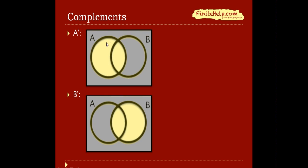A complement would be everything that's not in A. So here, as you can see, the shaded area is everything that's not in A but in the rectangle. And here the same way for B prime, which is everything that's not in B.